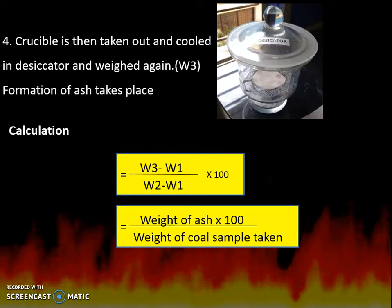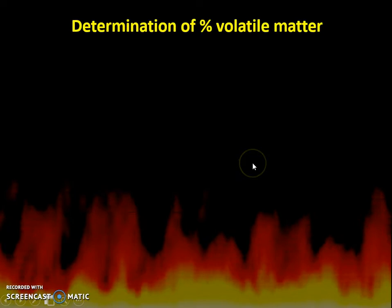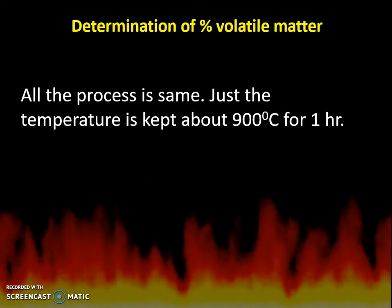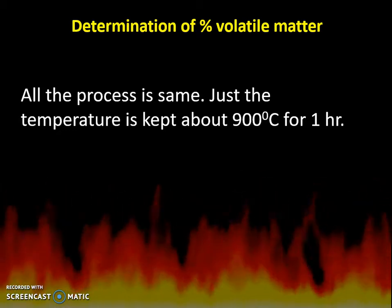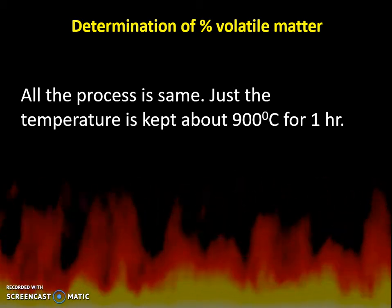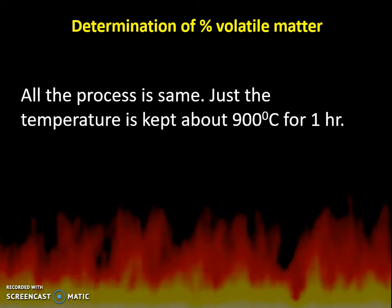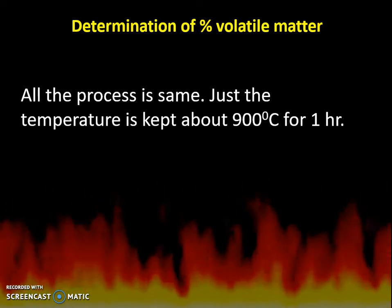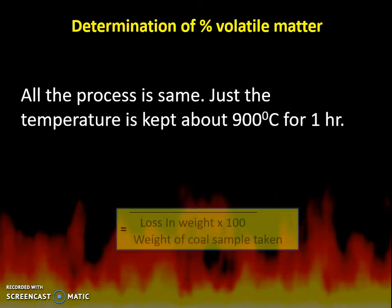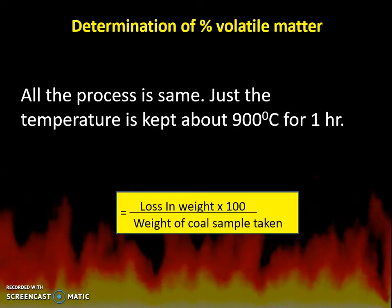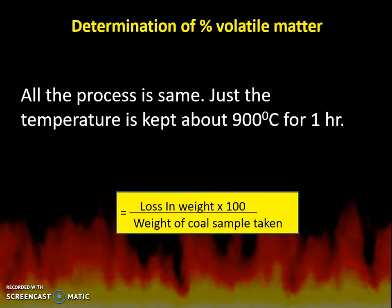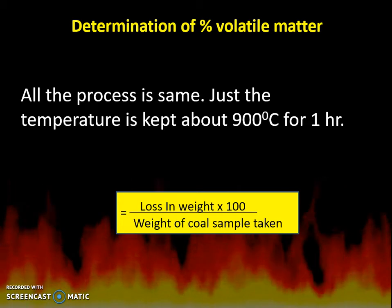For determination of percentage volatile matter, all the same steps are followed as in the previous practicals. The only difference is that the temperature is kept at 900 degrees Celsius for one hour. The percentage volatile matter is again calculated as: loss in weight multiplied by 100, divided by weight of coal sample taken.